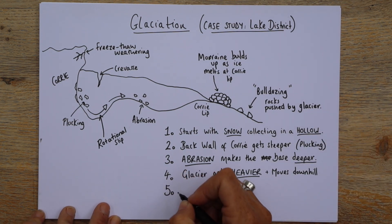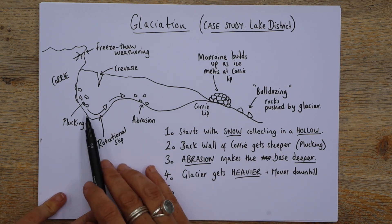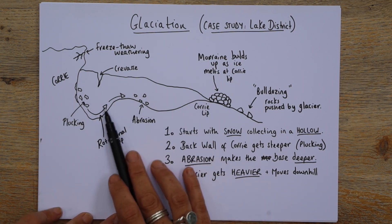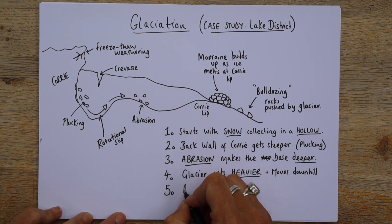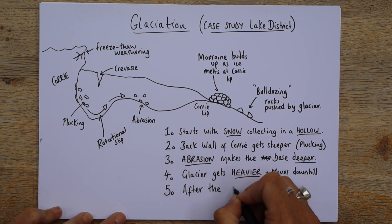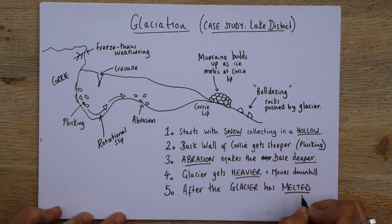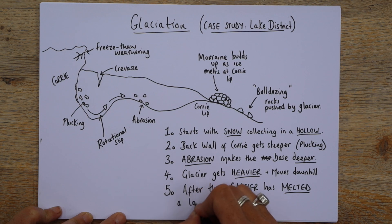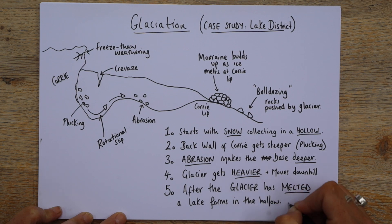Now, at the end of its life, because they do kind of have an end point, especially in some countries where temperatures and climate change are having an impact. And what can happen is it will leave behind this shape in the land and a lake will form. And that lake is called a Cori lake or a tarn. So what we can say is after the glacier has melted. Okay. After it has melted, a lake forms in the hollow. And then in brackets, yeah, it's called a Cori lake or tarn.